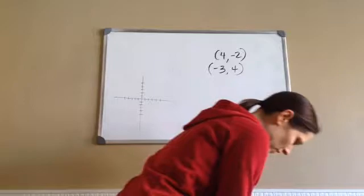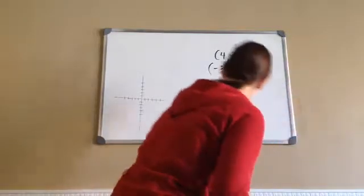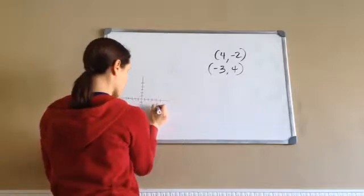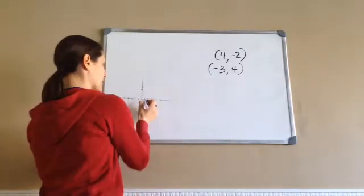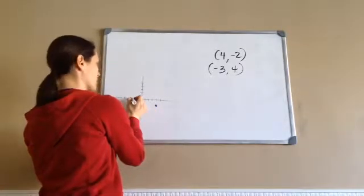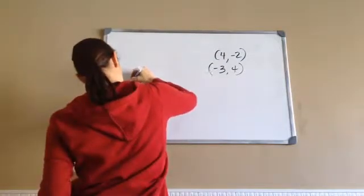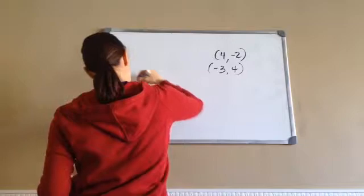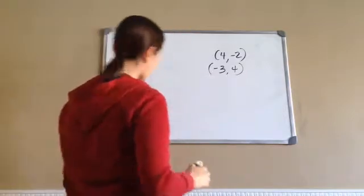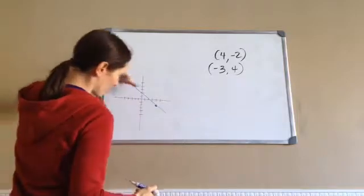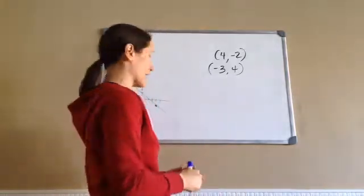All right, so let's go ahead and graph these points. I'm going to do blue this time. 4, negative 2, 1, 2, 3, 4, and negative 2 would be here. And then negative 3, 1, 2, 3, and positive 4 here. So, if I were to draw this line, it would look something like that. Now, as you can see, reading from left to right, this slope goes down, which means that it's going to be a negative.